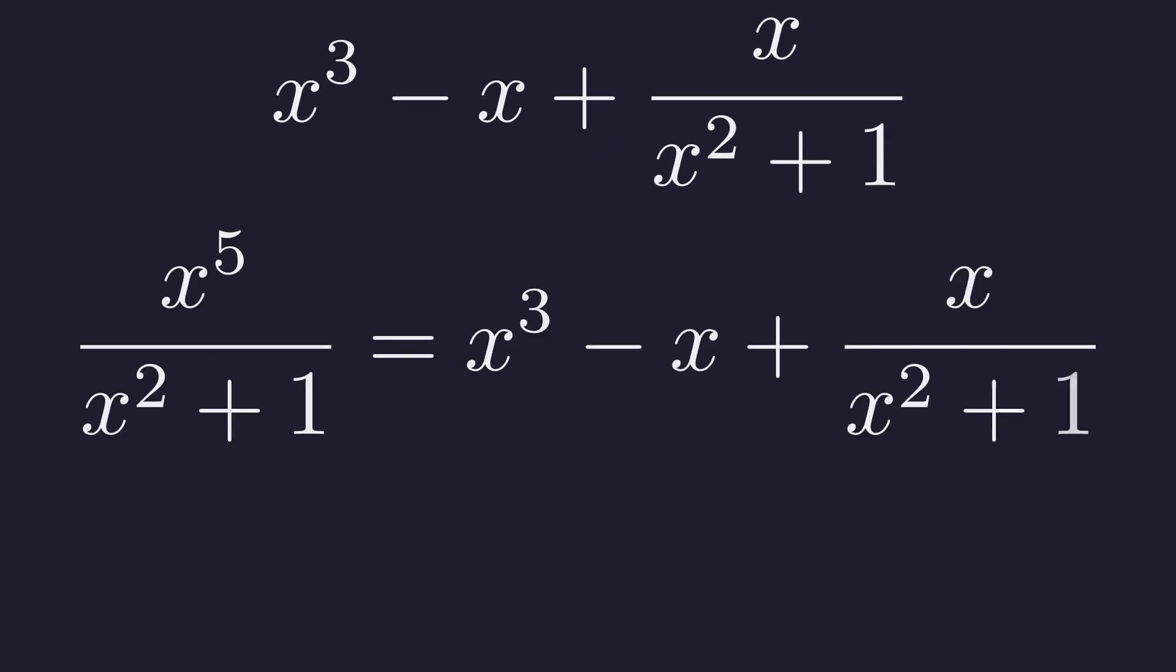We get x cubed minus x plus x over x squared plus 1. The degree of the remainder is now less than the degree of the divisor, so we're done.